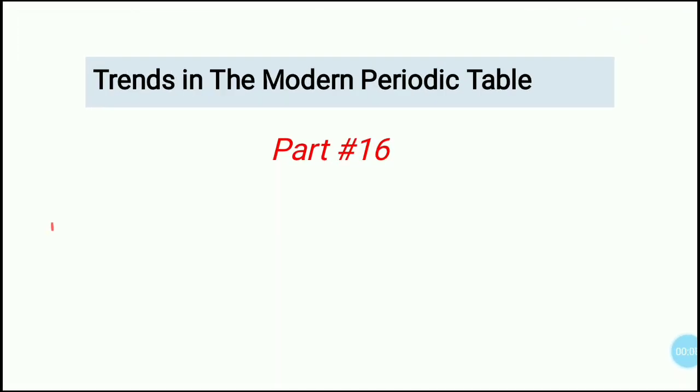Hello students, today our topic for discussion is trends in the modern periodic table. Here you can see the idea of the modern periodic table - where is s block, where is d block, where is p block. You have made the whole periodic table in homework. Let's start discussing the trends in modern periods. Trends means atomic properties which we get to see in the periodic table.